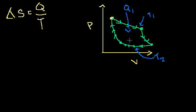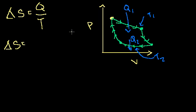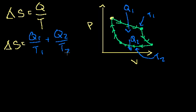There's some heat Q2 being released at the lower isotherm. Since the other steps are adiabatic, there's no transfer of heat to or from the system. When I looked at the Carnot cycle and used this definition of entropy, I saw that the total change in S, when going from the starting point all the way around and back, was equal to Q1 over T1 plus Q2 over T2.